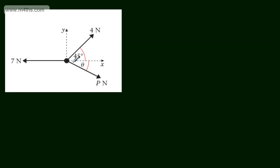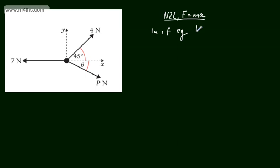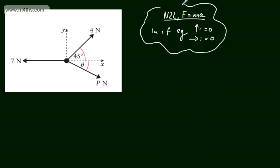So if this is in equilibrium, when we use Newton's second law, F is equal to MA, resolving in any direction will be equal to zero. If a particle is in equilibrium, the resultant force is zero — there's no acceleration. So all I'm going to state now is Newton's second law: F is equal to MA. If in equilibrium, if we resolve vertically, this will be equal to zero; if we resolve horizontally, this too will be equal to zero. That's the requirement for the particle to be in equilibrium.